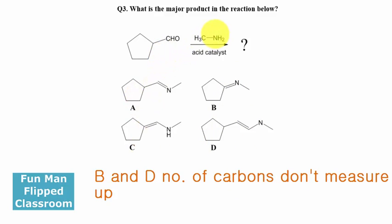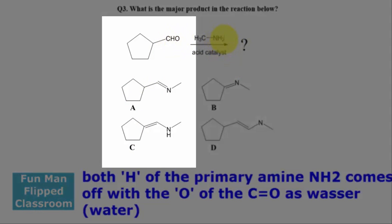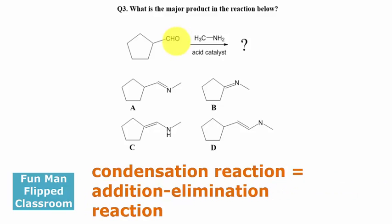You recall, the lone pair will attack this carbon here, and then you eliminate the oxygen after hydrolysis. So H2O comes off as water byproduct. This is a condensation reaction - the mechanism is nucleophilic addition followed by elimination of water.